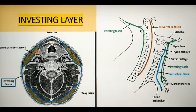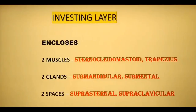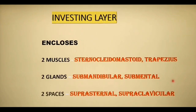Just like the investing fascia splits to enclose the sternocleidomastoid and trapezius muscles, it also splits to enclose two glands — the submandibular and submental glands — and two spaces: the suprasternal and supraclavicular spaces.